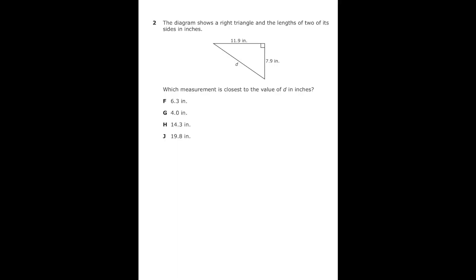This is number two from the 2022 eighth grade math STAR test. It says the diagram shows a right triangle and the lengths of two of its sides in inches. So we have 11.9 inches and 7.9 inches. Which measurement is closest to the value of D in inches?